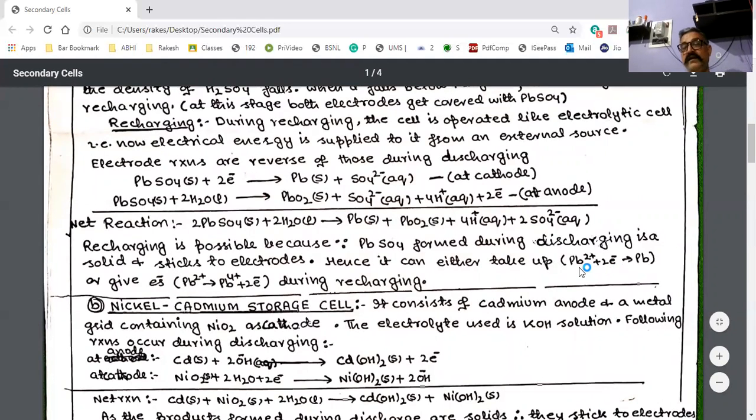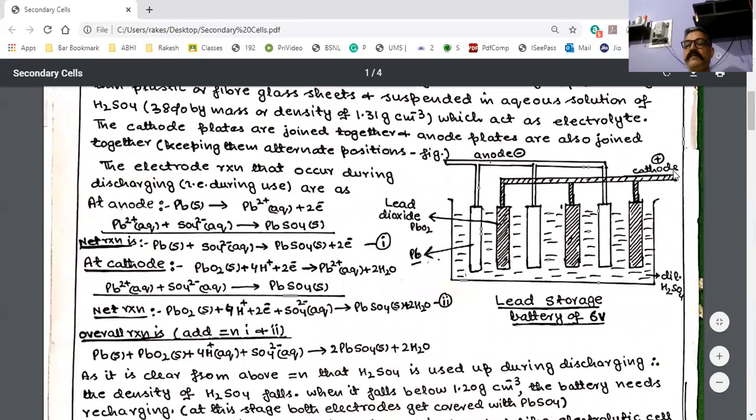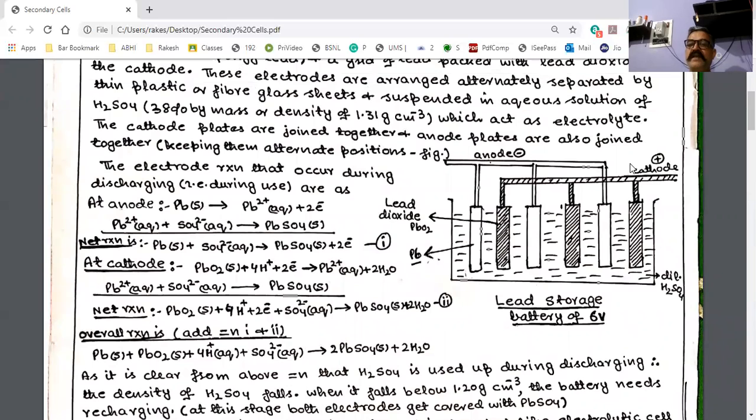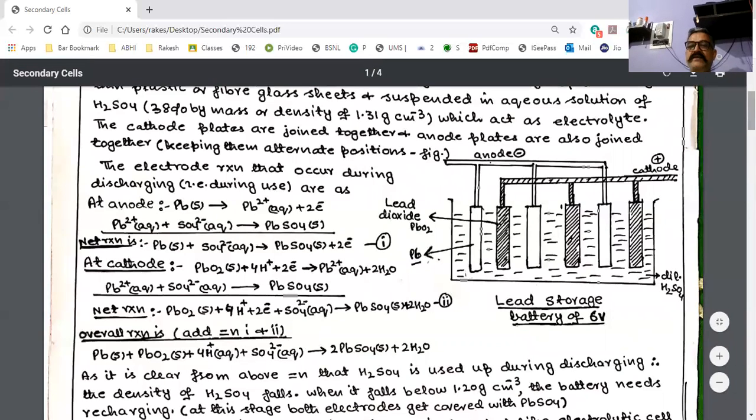The negative pole and positive pole complete the circuit. Another important secondary cell is nickel cadmium cell. Thank you very much.